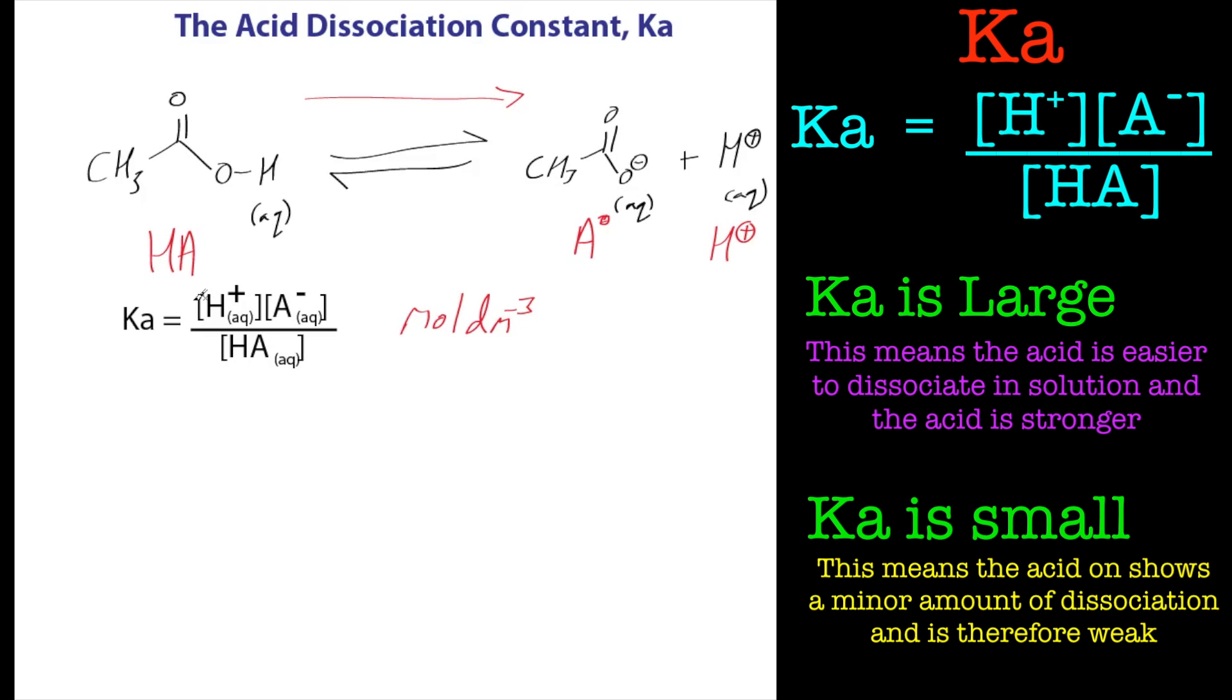So if we look at what the units of Ka should be, we have, we take H+, that's moles per decimetre cubed. A- will be moles per decimetre cubed. And that's all divided by moles per decimetre cubed. So you've got square of moles per decimetre cubed on the top, and that on the bottom. And if we do some simple maths, get rid of one, get rid of the other one like that, and we end up with that. And we end up with that equals Ka, the units of Ka should be defined as moles per decimetre cubed. It's always important to add the units on to the value there.